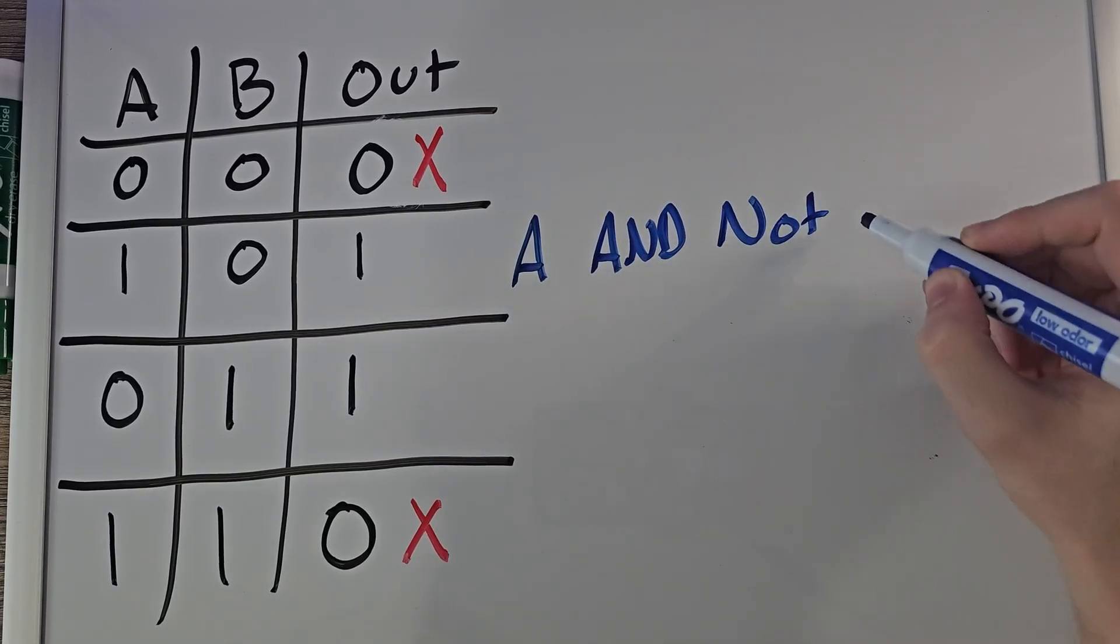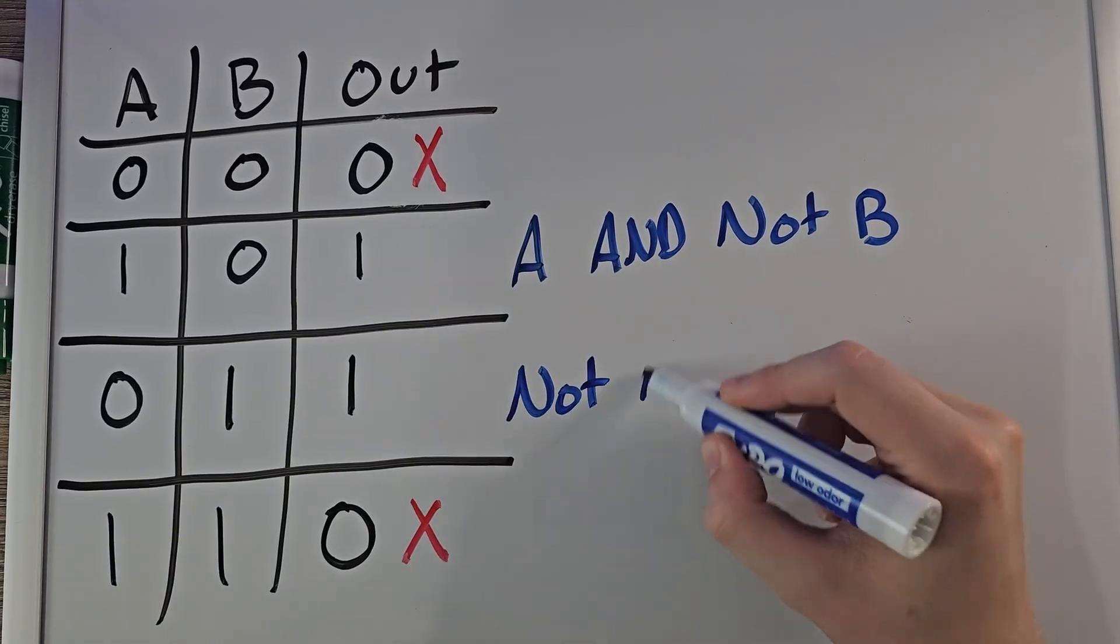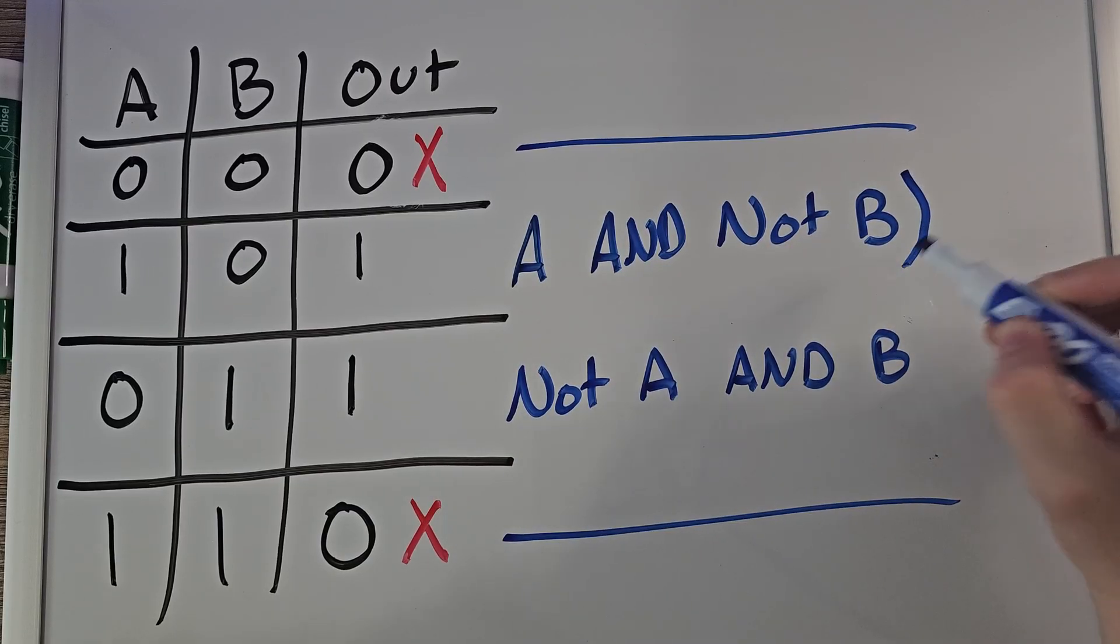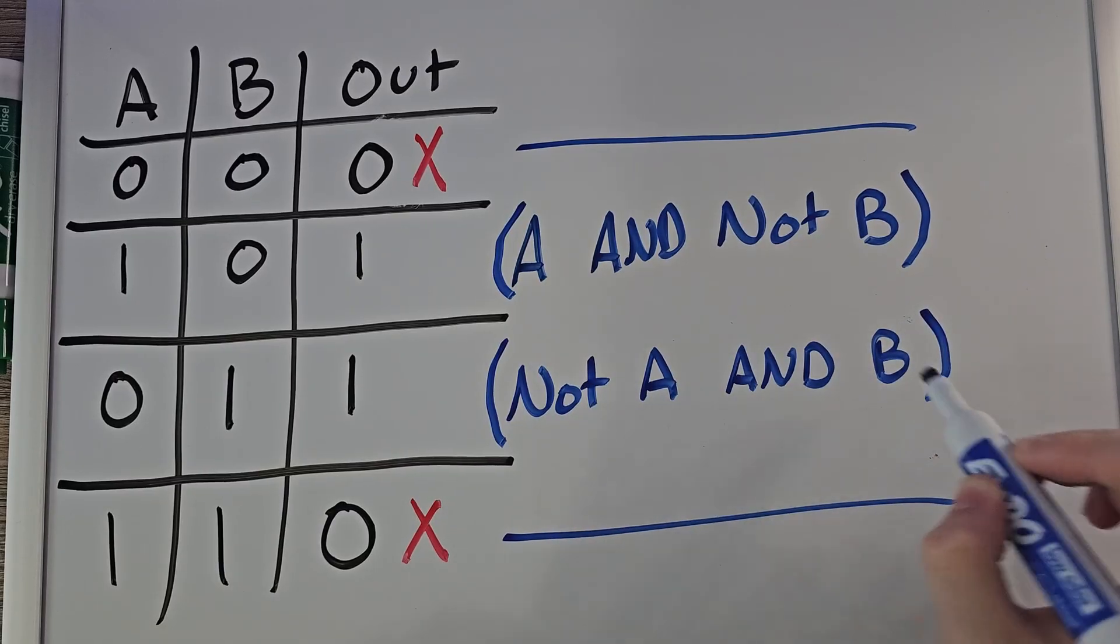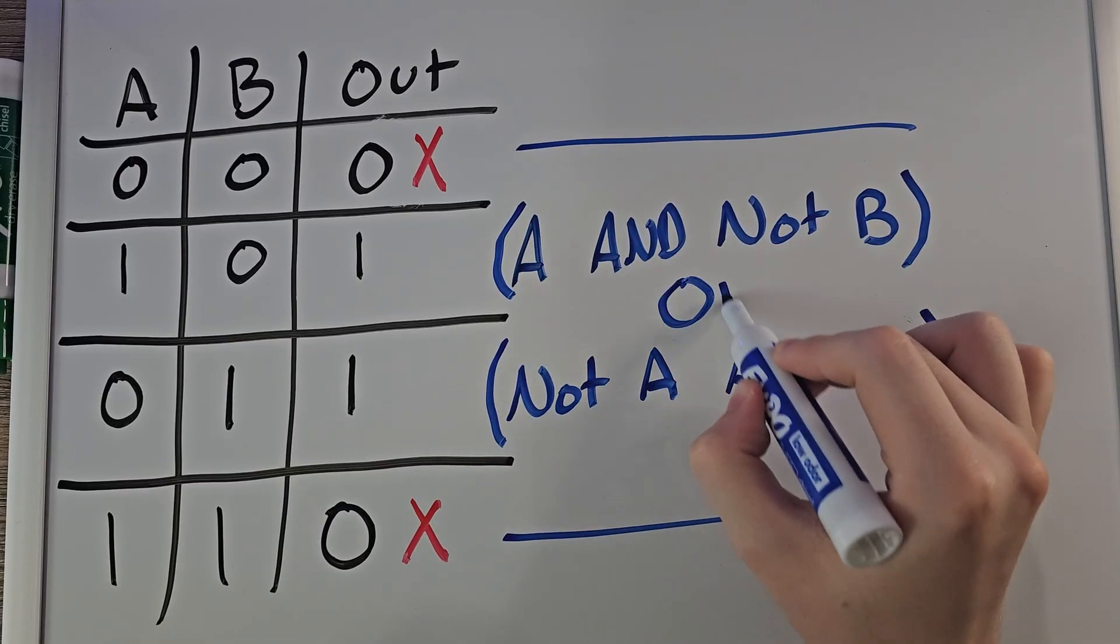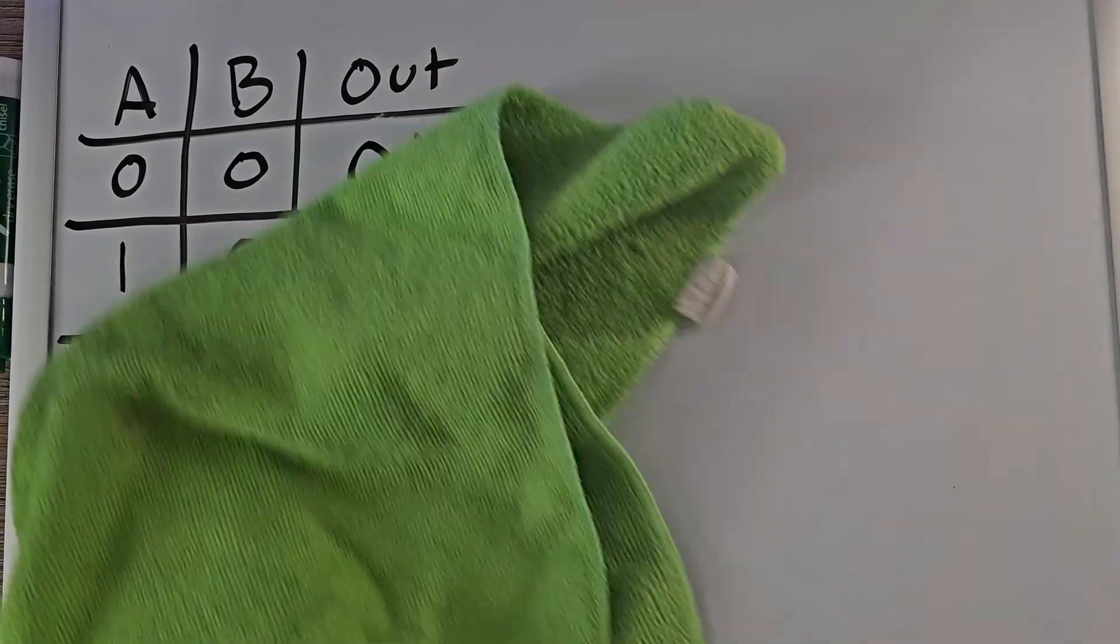This is A AND NOT B. The next row is NOT A AND B. So what do we do when we have to solve for two rows? Well, we're checking if two things are true, so in order to combine those, we can just use OR. So let's visualize this as a circuit.